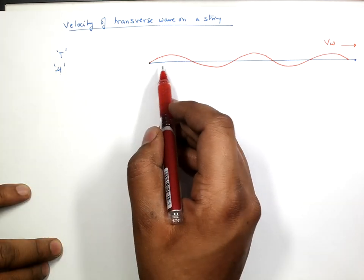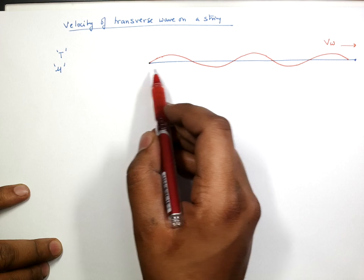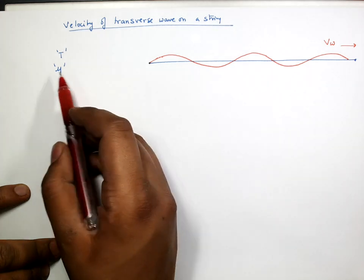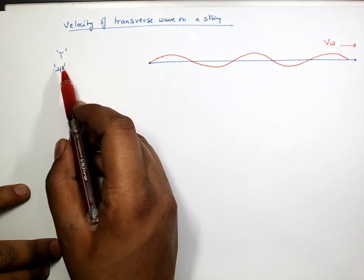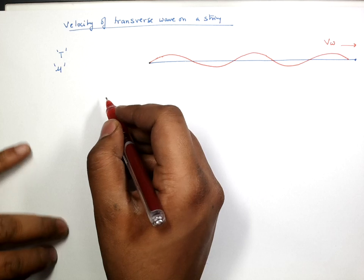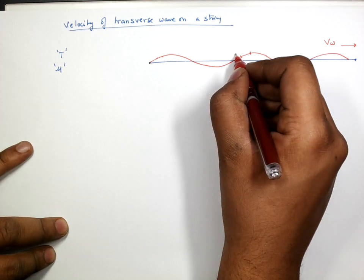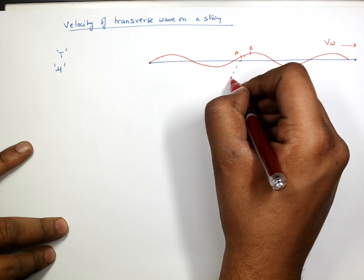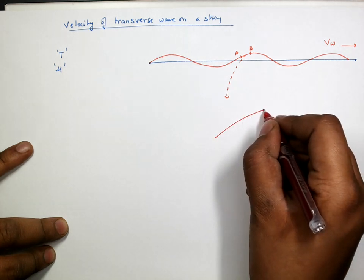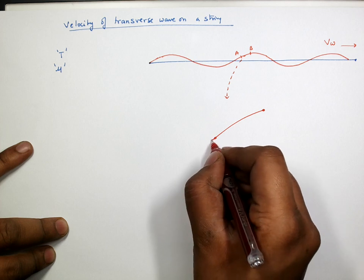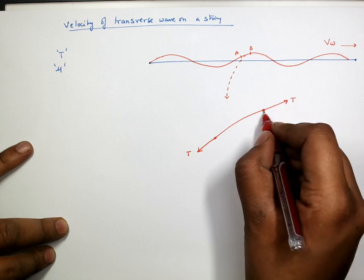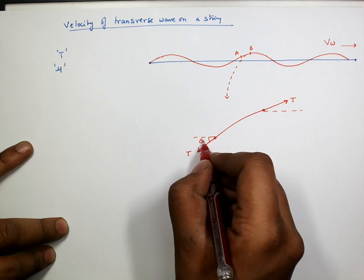The velocity of the transverse wave, or the velocity of disturbance passing on this rope, will depend on the inertial and elastic properties of this rope. Tension is in a way the elastic property, and μ is in a way the inertial property. Now suppose we take an element AB of this rope. On the two ends, this element is experiencing tension force on each side, and we can take the angles with the horizontal as θ₁ and θ₂.